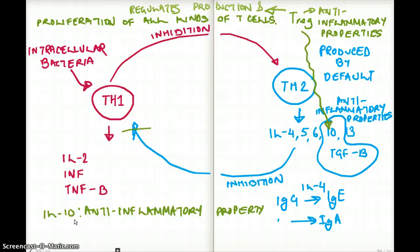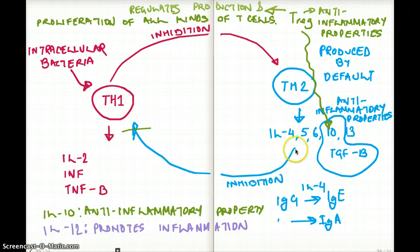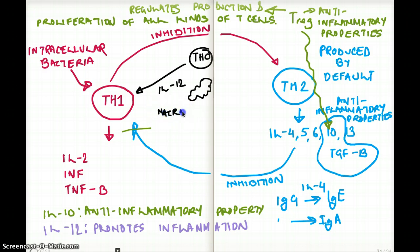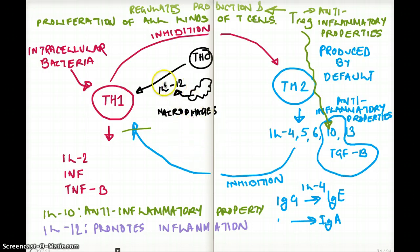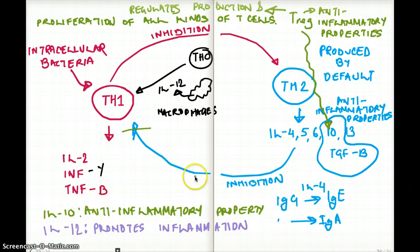If IL-10 suppresses inflammation, what interleukin promotes inflammation? That is IL-12. IL-12 is made by macrophages, and those macrophages that are making IL-12 are also promoting the production of T helper 1 cells. So macrophages promote inflammation by secreting IL-12, which makes more T helper 1 cells, which in turn make more IL-2, interferon gamma, and TNF-beta. IL-12 itself also promotes inflammation.